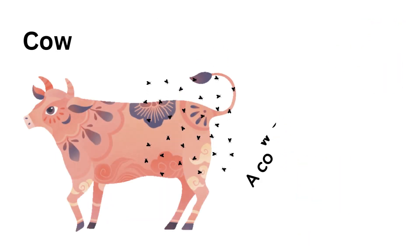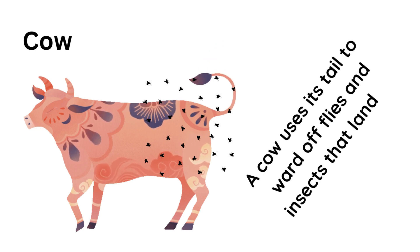A cow uses its tail to ward off flies and insects that land on its body.